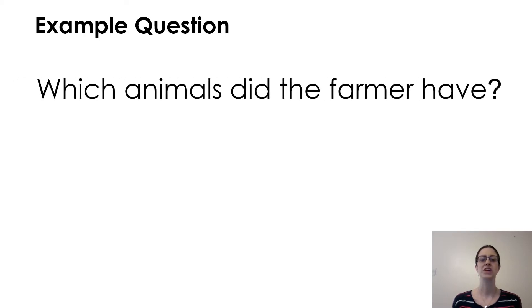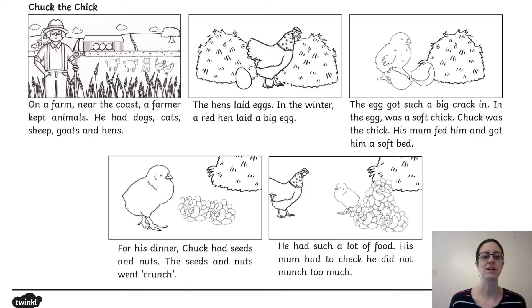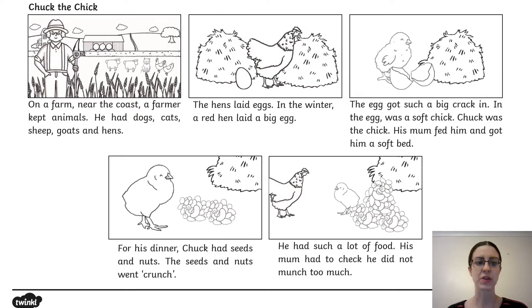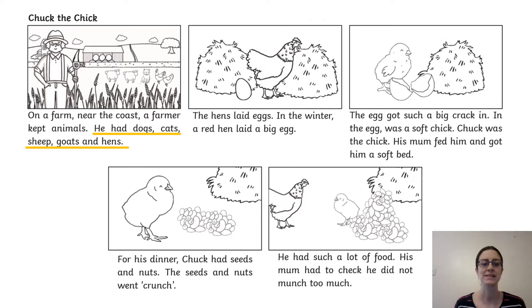The first example question is: which animals did the farmer have? I need to read the text to find out which animals the farmer had. On a farm near the coast, a farmer kept animals. He had dogs, cats, sheep, goats and hens. Think about the part that I just read — which animals did the farmer have? Pause the video and tell your adult. The answer is he had dogs, cats, sheep, goats and hens. I have underlined the answer that I found.